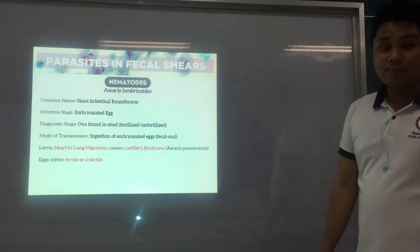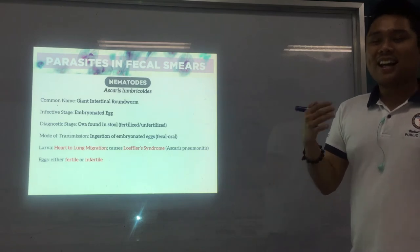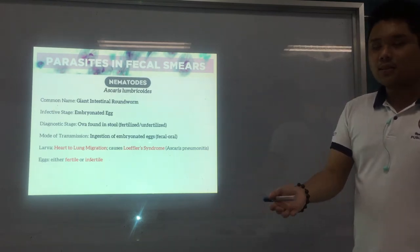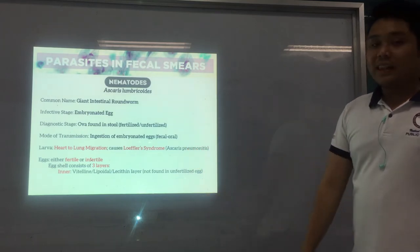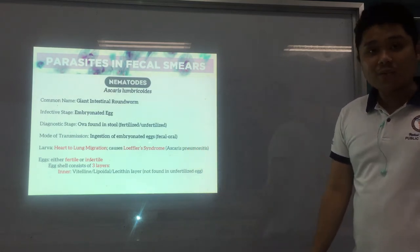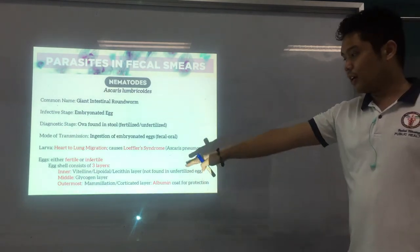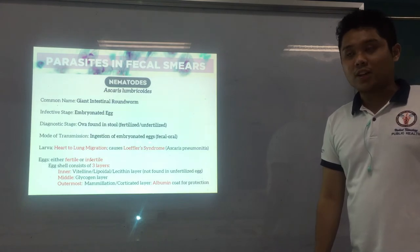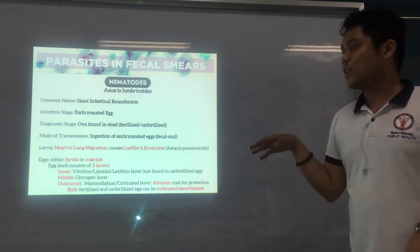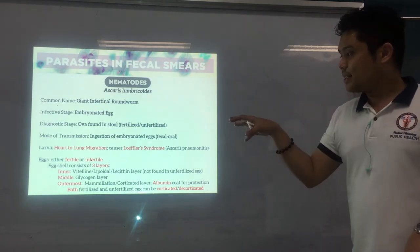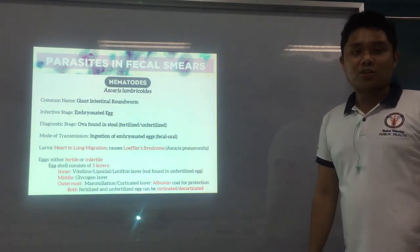The eggs may be either fertile or infertile. When fertilized, the male and female have undergone reproduction and the egg is inseminated. The egg shell consists of three layers: the innermost vitelline or lipoidal layer, which is not found in unfertilized eggs; a middle glycogen layer; and the outermost mammylated albuminoid coat or corticated layer made up of albumin for protection. Both fertilized and unfertilized eggs can be decorticated or corticated — we'll look at what those mean.